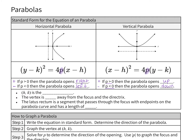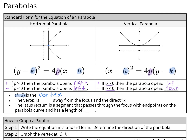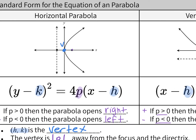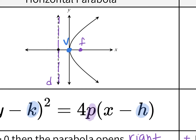A few other things in the equation you need to know: h and k, found inside the parentheses, give you the vertex of the parabola. For vertical parabolas, that's what we're more used to seeing — it's either the minimum or the maximum. For horizontal, it's where it changes direction. The vertex is the absolute value of p units away from both the focus and the directrix. The focus is that point inside the parabola. The directrix is the dotted line. From the vertex to the directrix is p units; from the vertex to the focus is also p units.